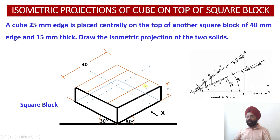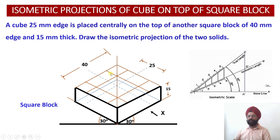The remaining distance will be 7.5 mm from this edge on each side. Similarly, on the other side, two projectors are drawn at 12.5 mm from the axis point. So this distance is 12.5 and this is also 12.5, leaving 7.5 from these two edges. I have now obtained a square for which the center remains the same — that is why the cube is located centrally on top of the square block.